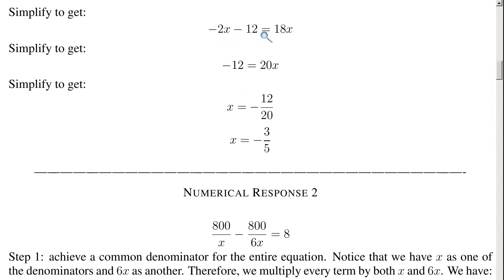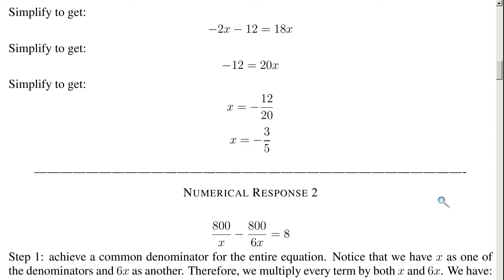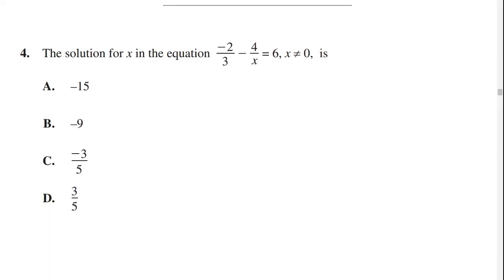So negative 2x minus 12 equals 18x. Add 2x to both sides to cancel the negative 2x, and we're left with negative 12 equals 20x. Divide both sides by 20: negative 12 divided by 20 equals x. So x equals negative 12 over 20, which equals negative 3 over 5. Our answer is C, negative 3 over 5.